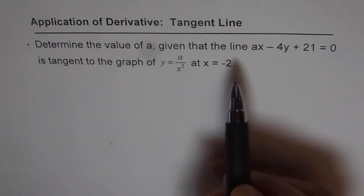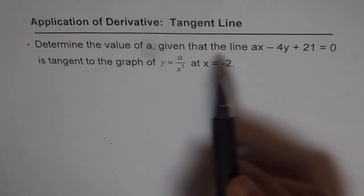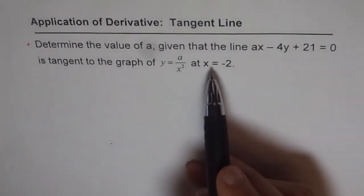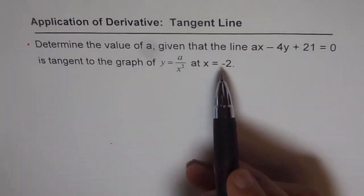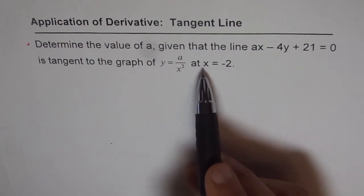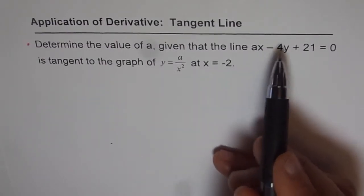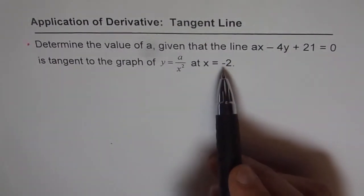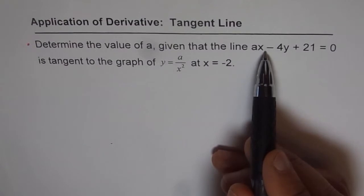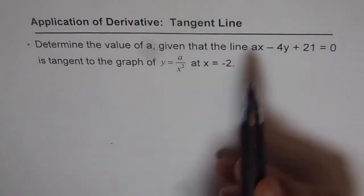Now when we say that this line is tangent to a graph at X equals minus 2, then we mean to say that X equals minus 2 has a common point between line and the graph. So this point exists on both graph and the line, the curve and the line.